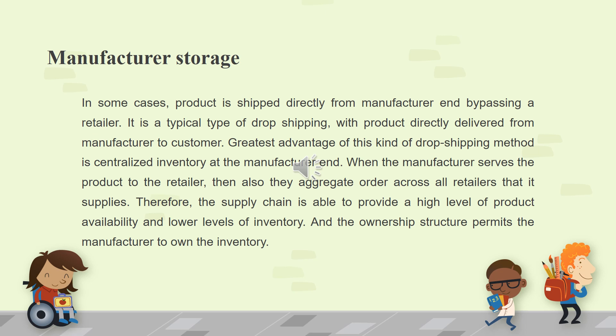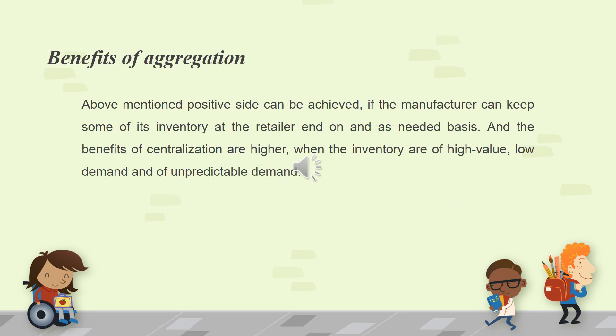Therefore, the supply chain is able to provide a high level of product availability and lower levels of inventory, and the ownership structure permits the manufacturer to own the inventory. These benefits can be achieved if the manufacturer can keep some of its inventory at the retailer's end on an as-needed basis. The benefits of centralization are higher when the inventory is of high value, low demand, and unpredictable demand.